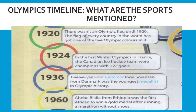In 1920, there wasn't an Olympic flag until 1920. The flag of every country in the world has got one of the five Olympic colors in it. In 1924, in the first Winter Olympics in France, the Canadian ice hockey team were champions with 122 goals. In 1936, 12-year-old swimmer Inger Sorensen from Denmark was the youngest medalist in Olympic history. Swimmer means Perenang. Medallist means Pemenang Pingat.